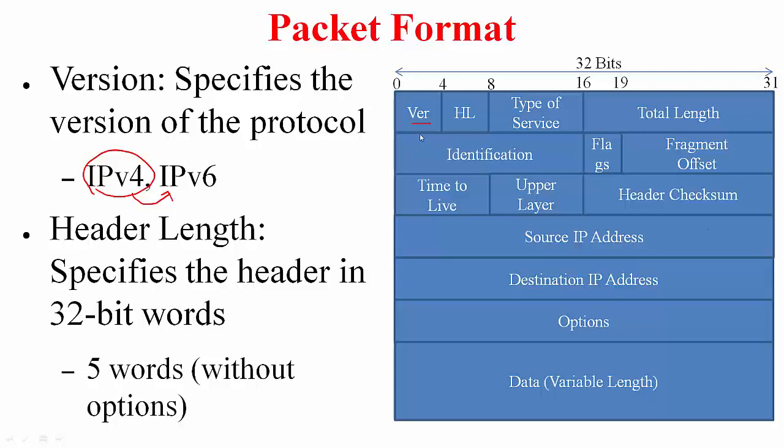Following version is the HL field which stands for header length. This specifies the entire IP header in 32-bit words. For example, if HL takes on a value of 5 that means the header length is 5 into 32, which equals 160 bits.